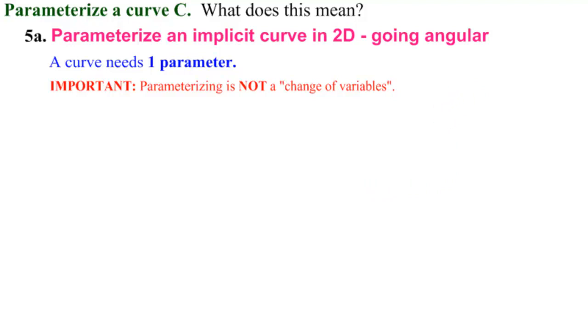We're going to start with the standard implicit curve. There it is, x squared plus y squared equals 1.